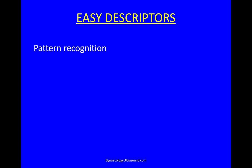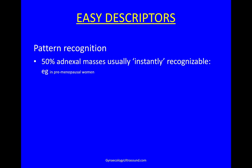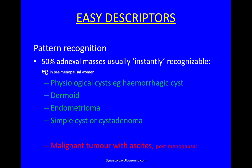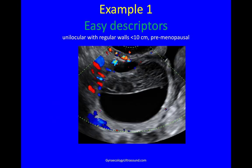Now let's look at easy descriptors. Easy descriptors is pattern recognition and about half of all adnexal masses are instantly recognisable. In premenopausal women, a physiological cyst like a hemorrhagic cyst, a dermoid, an endometrioma, or a simple cyst or cyst adenoma — you will know those immediately. A malignant tumour with ascites in a postmenopausal woman is a malignant easy descriptor — again, you will not need any help with that. So that's 50% of all adnexal masses done in one go.